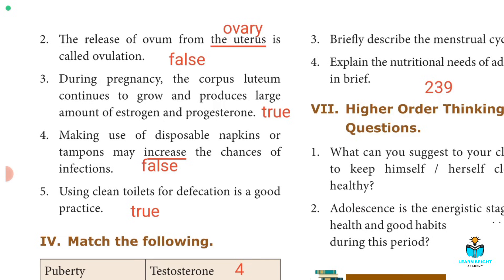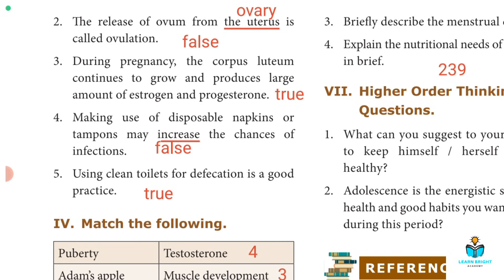Fourth: Making use of disposable napkins or tampons may increase the chances of infections. This is false — it will decrease the chances of infection. Fifth: Using clean toilets for defecation is a good practice. True.